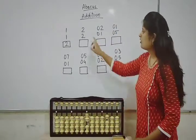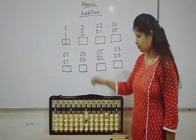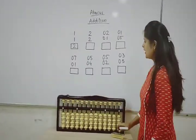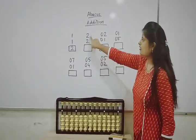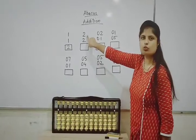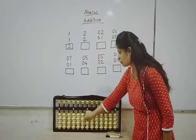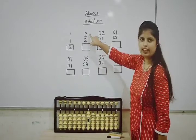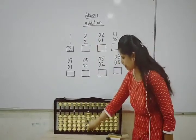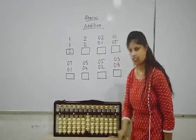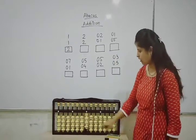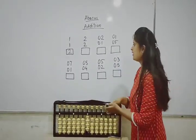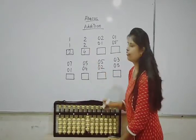Now, before going to the second sum, let us clear the apparatus. In the second example, the number is two, so we have to move two bits up. Again, in addition we have to add two more bits — so take two more bits up. Now count the total: one, two, three, four — so our answer is four.